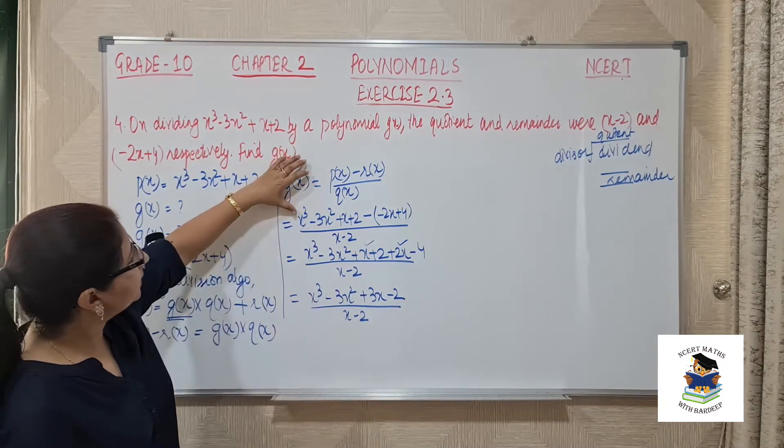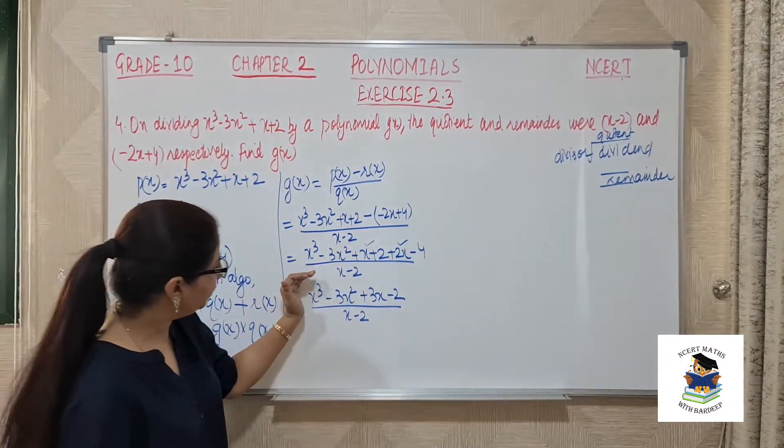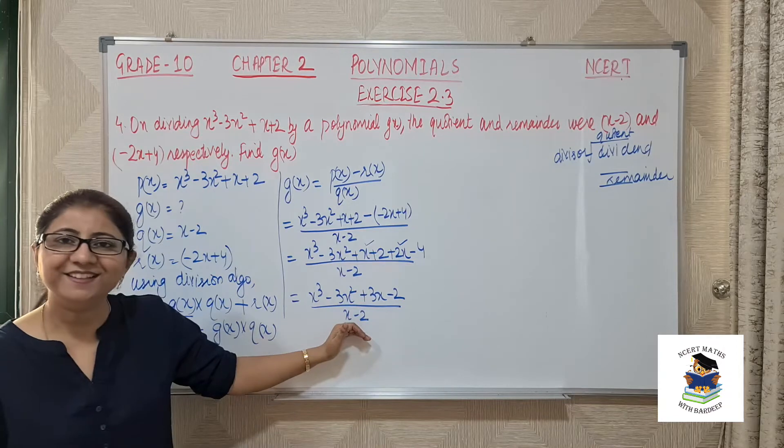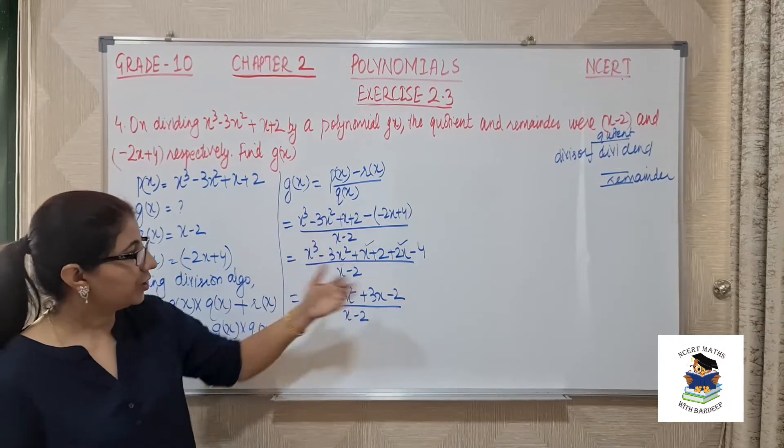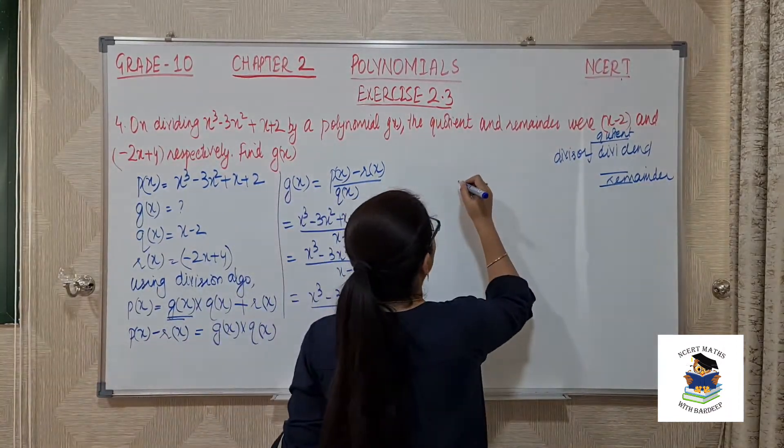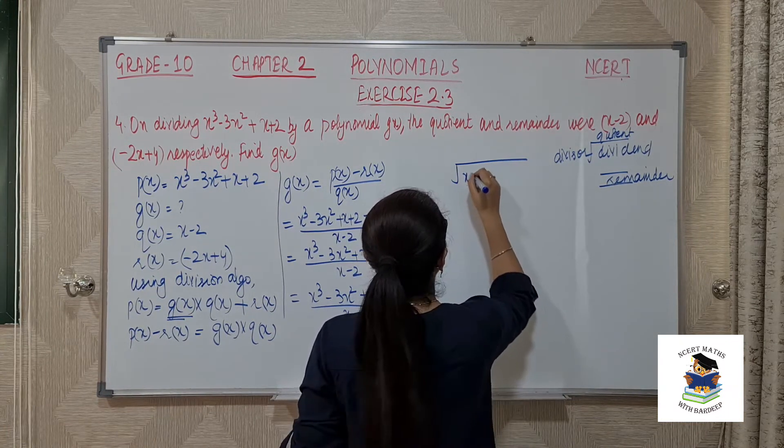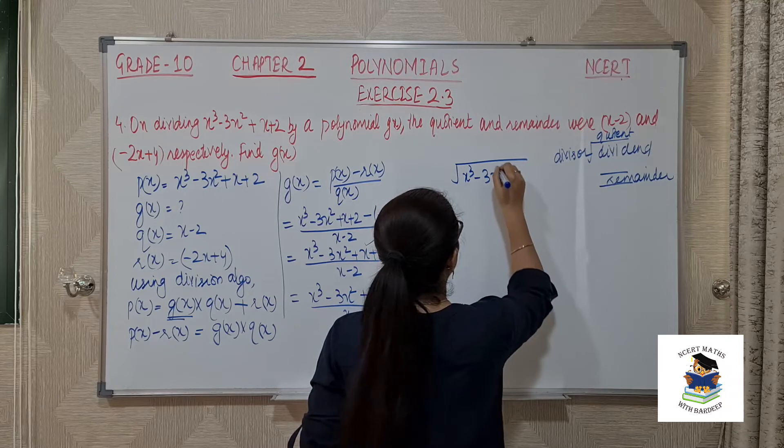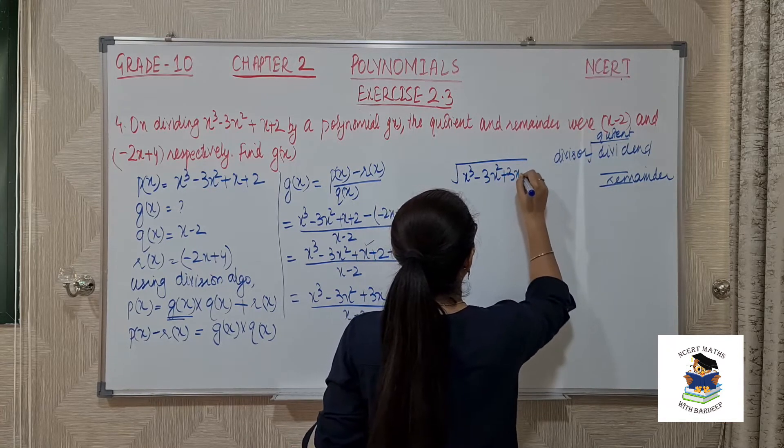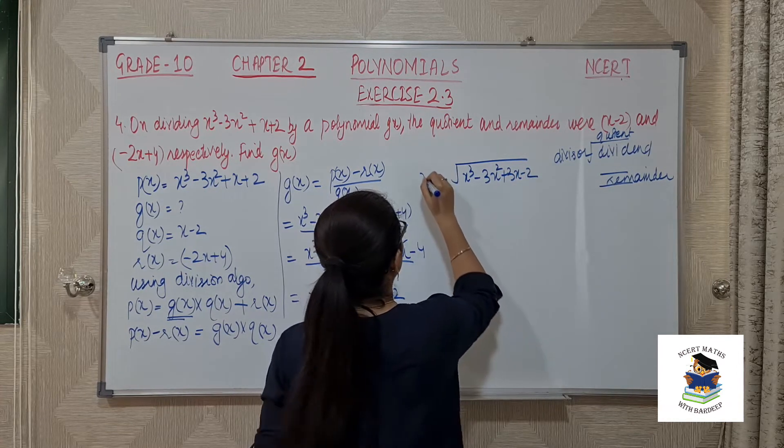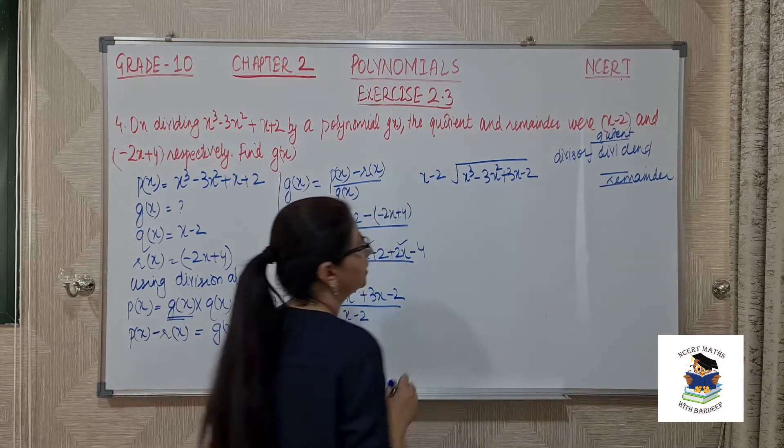This means that gx is equal to when you divide this polynomial with this polynomial. Now let us divide them.